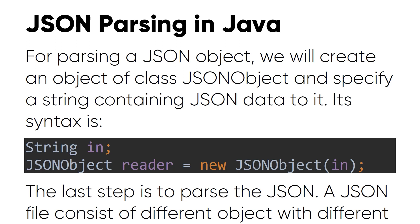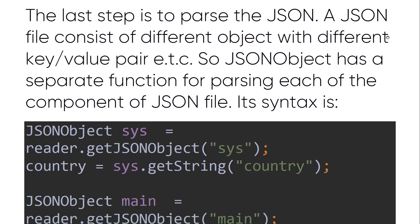In this lesson we are going to learn how to parse simple JSON from a string in Java and Android. For parsing a JSON object, we will create an object of class JSONObject and specify a string containing JSON data to it. The syntax is: String in, JSONObject reader equals new JSONObject, and we send and pass the string.